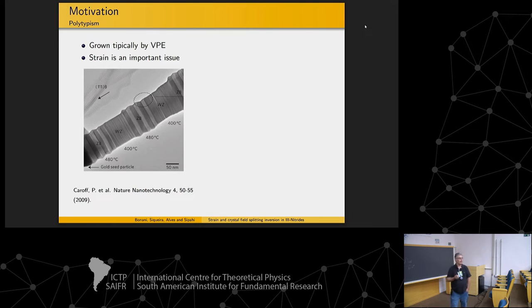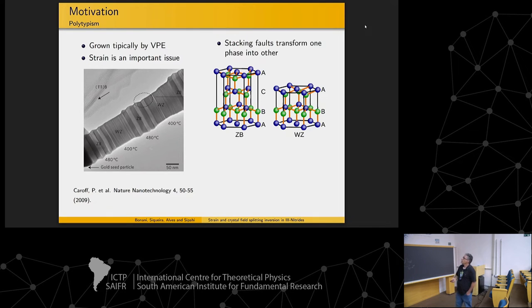Here, these regions where you don't have these kinks are wurtzite, clear wurtzite regions, and these ones are zinc blend directions. In this growth mechanism, they are oriented in a very specific direction. So zinc blend is oriented in one direction, and wurtzite is oriented along the C direction that we can see here.